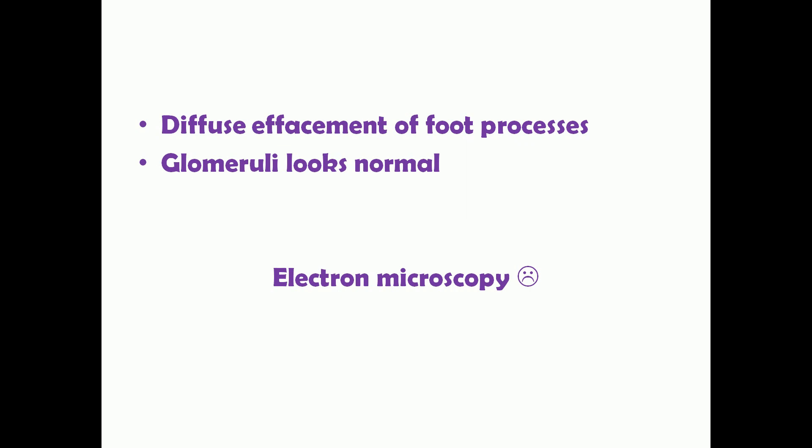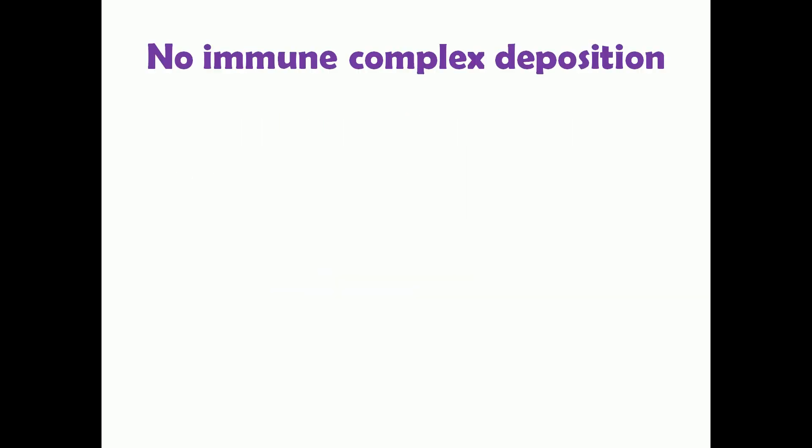In those situations, minimal change disease is basically a clinical diagnosis — patients are clinically diagnosed rather than being sent for investigations. Unlike other conditions such as membranous nephropathy which lead to nephrotic syndrome, in minimal change disease there are no immune complex depositions in the nephrons. This can be confirmed by immunofluorescence microscopy, which stains immune complexes green. In minimal change disease, immunofluorescence microscopy will not find any immune complex deposition, ruling out other conditions such as membranous nephropathy.